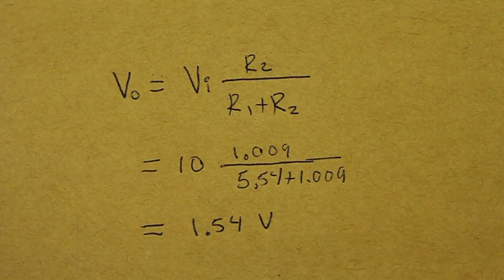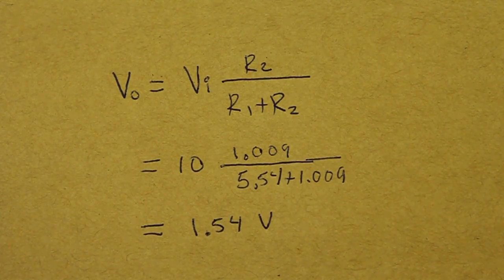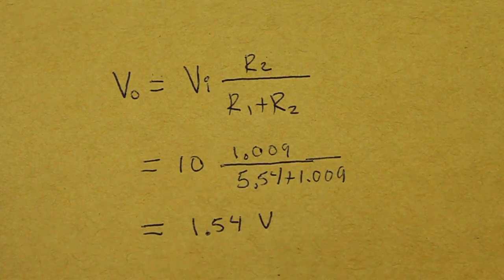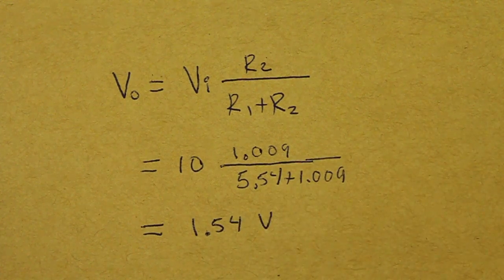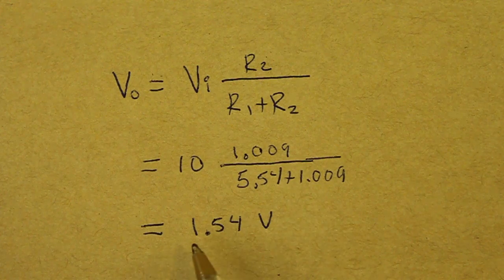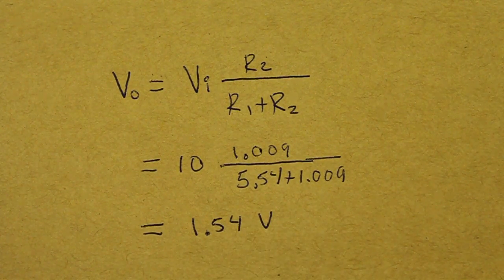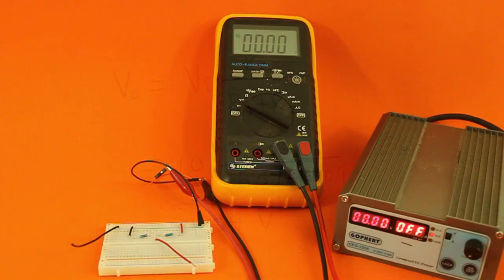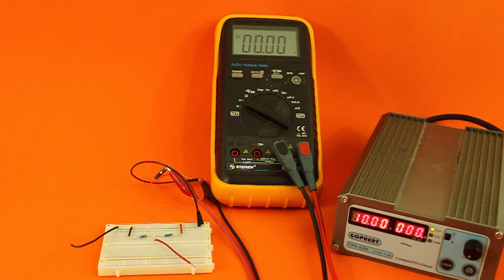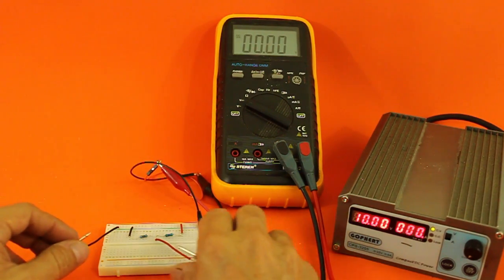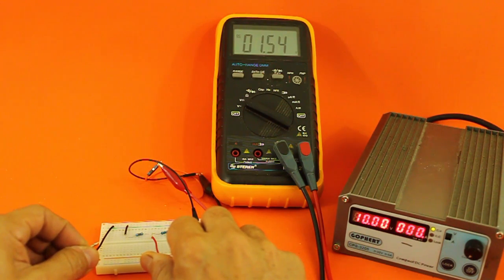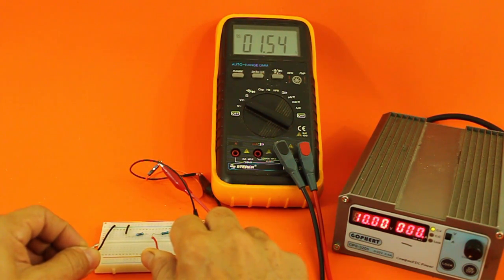This is the formula for the output voltage that we saw previously using an input voltage of 10 volts and with the values that we measured for the resistors, we should obtain at the output 1.54 volts. Let's check it with the multimeter. I will apply 10 volts to the voltage divider and let's check the output voltage, and it is 1.54 volts as we calculated.